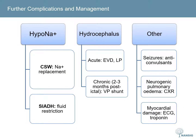Other complications in subarachnoid haemorrhage include hyponatraemia. Most frequently this is due to cerebral salt wasting, and the treatment is sodium replacement. Occasionally it is due to SIADH, which is more difficult to manage as the treatment of choice is fluid restriction, but this can cause ischaemic problems in subarachnoid haemorrhage. Hydrocephalus may require insertion of an external ventricular drain, or if non-obstructive, a lumbar puncture may be performed. If permanent CSF diversion is required, a ventriculoperitoneal shunt is indicated. Seizures and neurogenic pulmonary oedema can also occur.